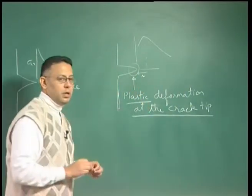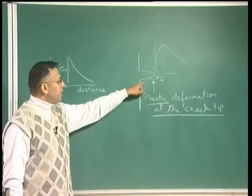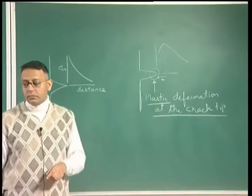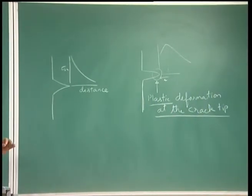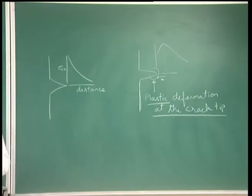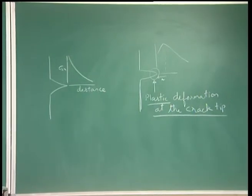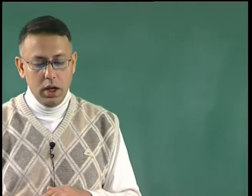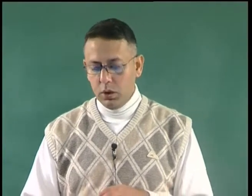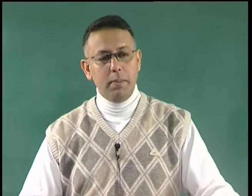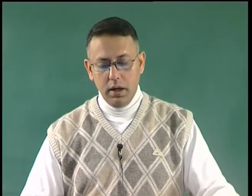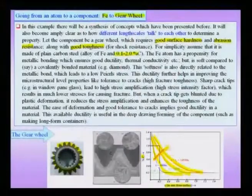This plastic deformation is what requires the ductility in the material; to understand the need for ductility we actually have to go down to the crack tip level. To summarize: a gear wheel needs good surface hardness, good abrasion resistance, and good toughness. Good surface hardness is achieved by imposing a higher amount of carbon on the surface. The total treatment consists of not only putting in carbon but also heat, and this carbon is typically put in at a high temperature. The sample is then quenched from the high temperature so that the phase known as the martensitic phase forms, which gives it the requisite surface hardness.